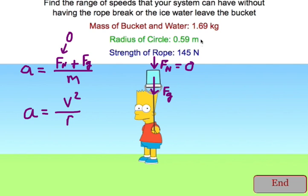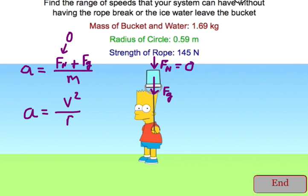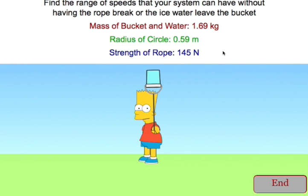We now have the minimum and maximum speed that the bucket can have. And that's what we're looking for. The minimum speed at the top so the water does not spill, and the maximum speed at the bottom so that the rope does not break.